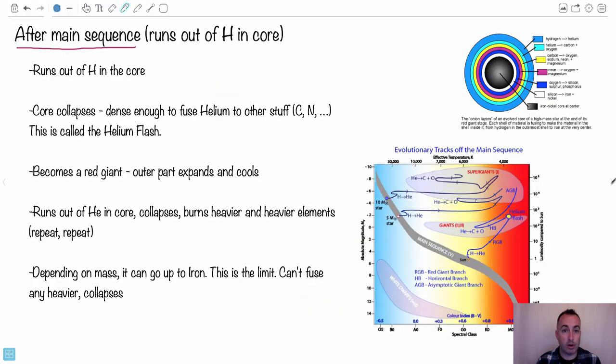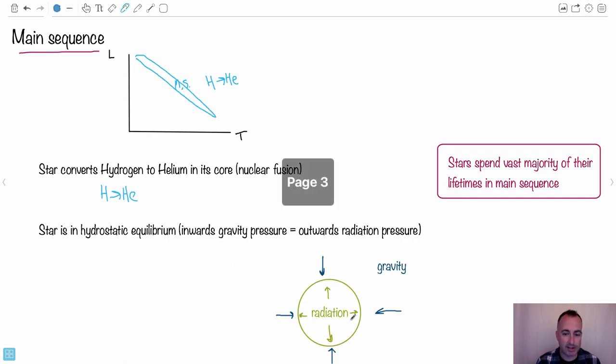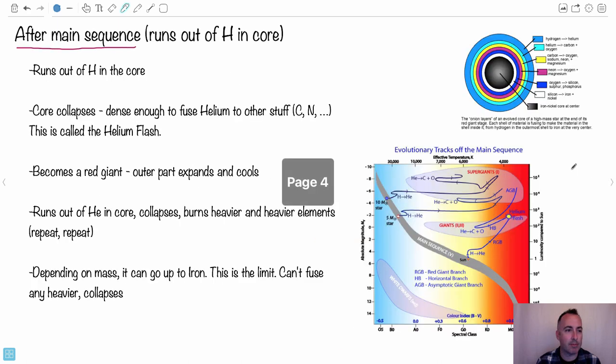Maybe we want to know what happens after the main sequence. What happens after you run out of hydrogen? Think about what's going to happen. Imagine your core runs out of hydrogen because it used it all up. Well, then you can't push outwards anymore, so gravity wins. The core collapses, and it might become dense enough to fuse helium. This is called the helium flash.